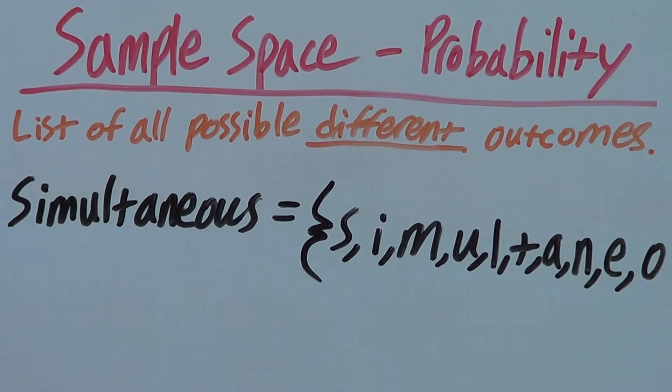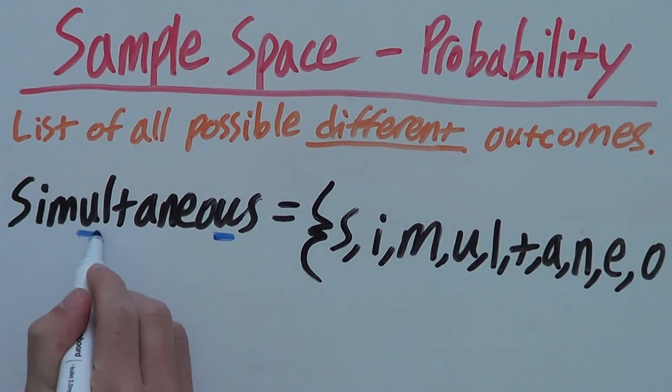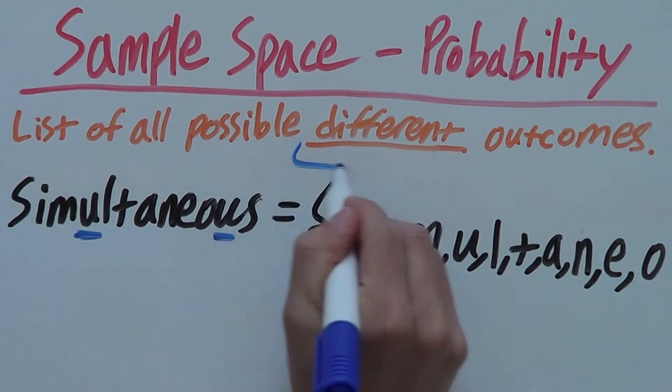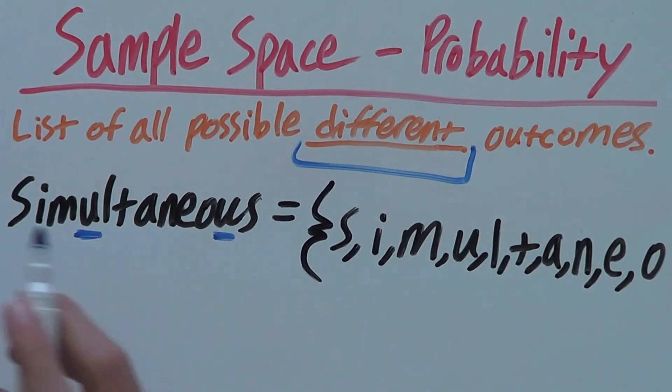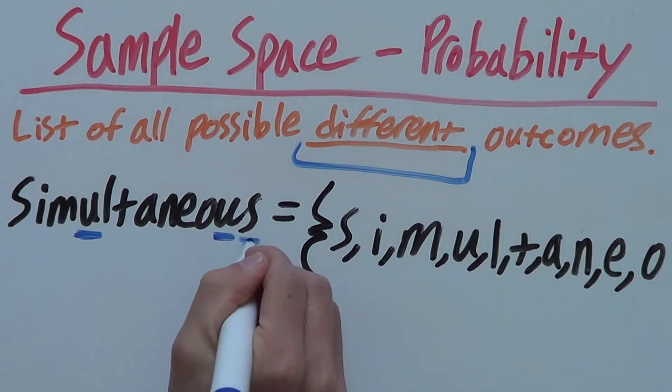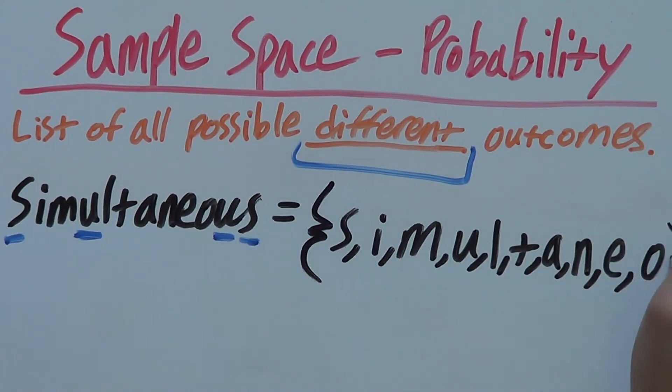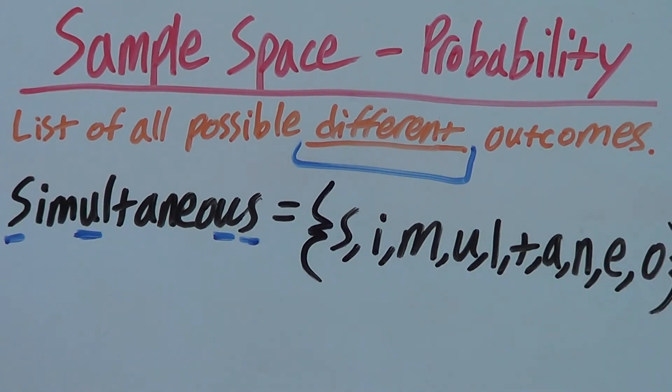But we cannot include U because as we can see, we've already included U here. We can't include it again because sample space is a list of all the possible different outcomes. That's the same with S as we've already included it here. So that is actually the end of our list. We finish it off with a second curly bracket.